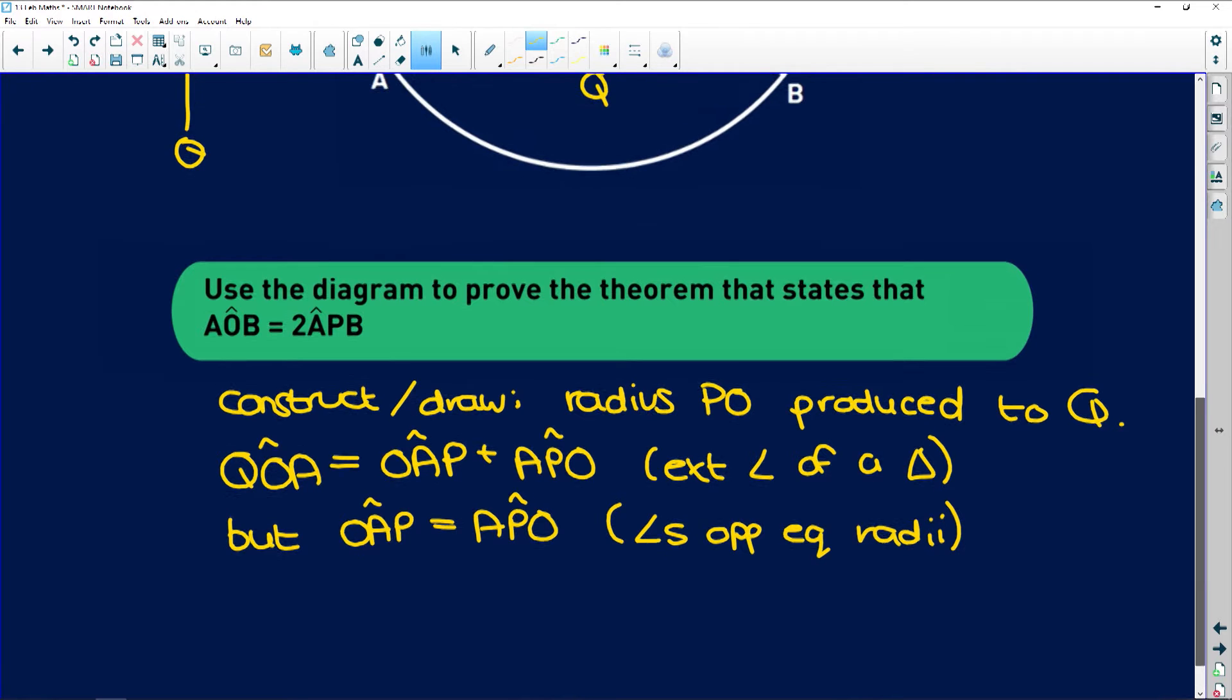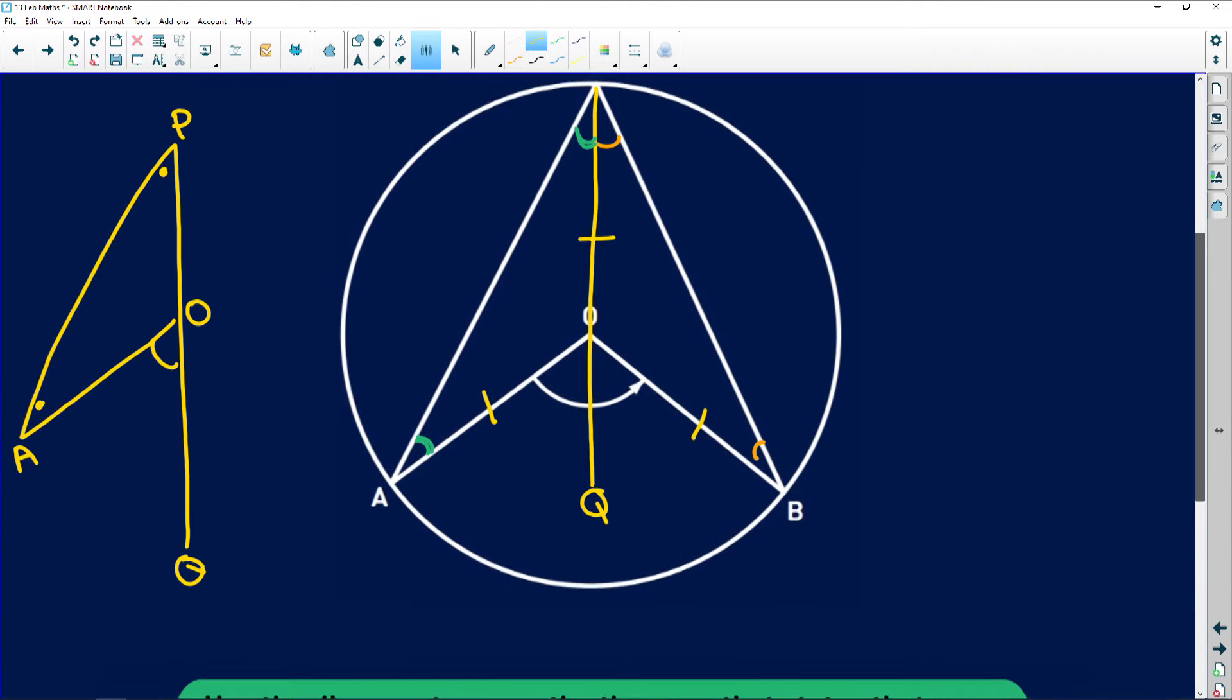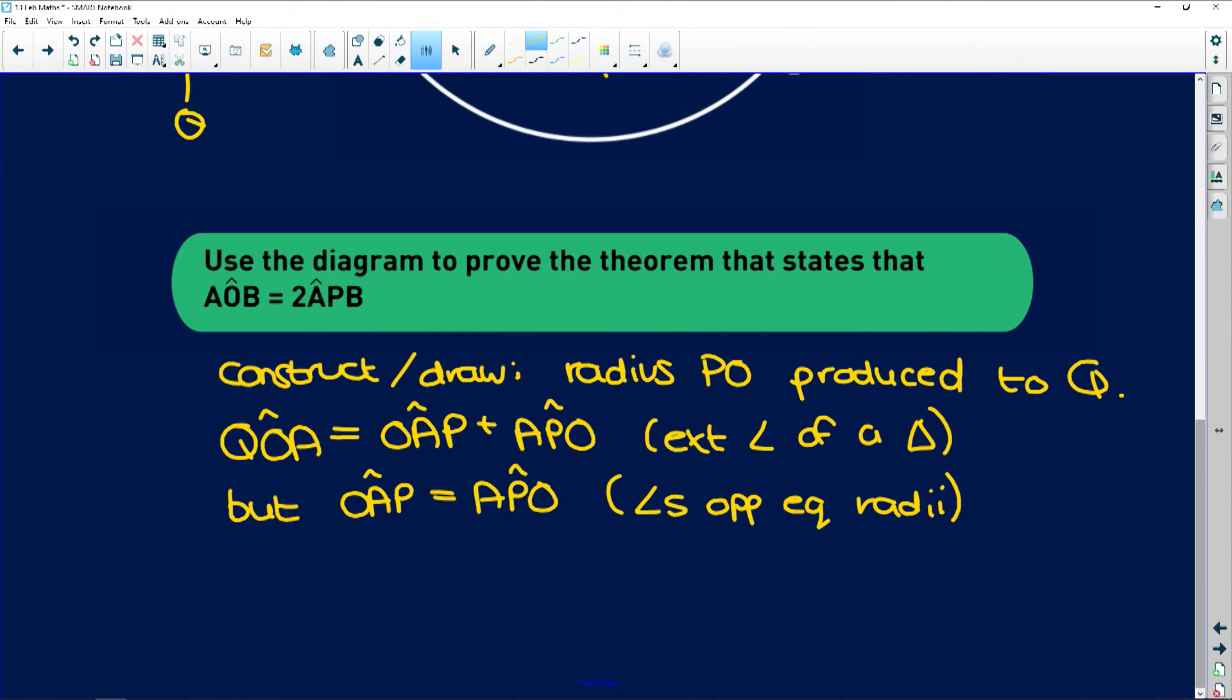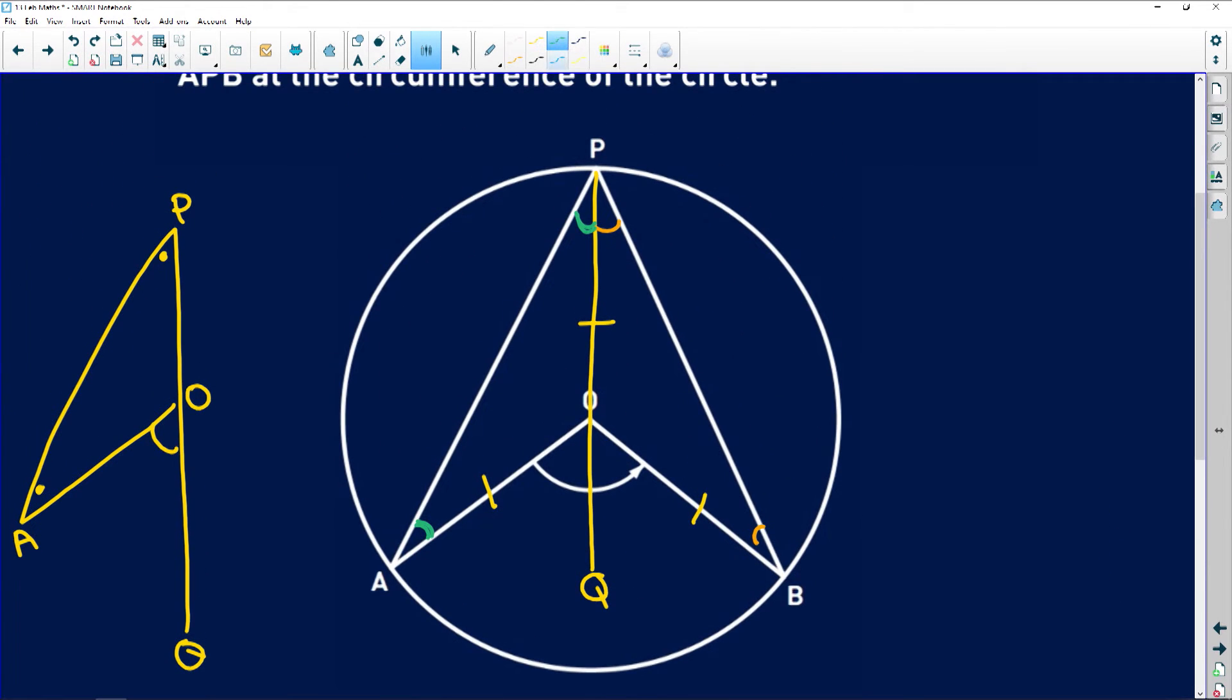Very important, these are these two angles over here, these ones in green that I've highlighted. Which means that QOA is equal to 2 times APO. So we've established that this angle over here, this exterior angle, is equal to 2 times that angle.